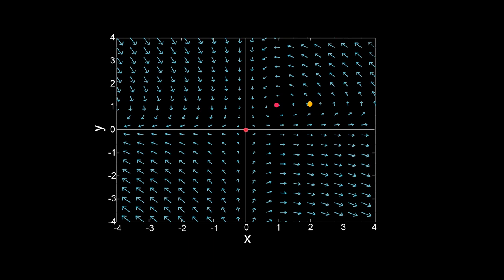Suppose, initially the system was at x = 2 and y = 1. The vector at this position indicates that with time, the system will move in this direction. So, x will decrease and y will increase.